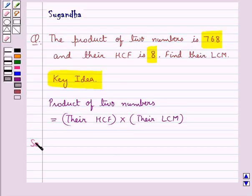Now let's see the solution. So we are given the product of the two numbers is equal to 768.